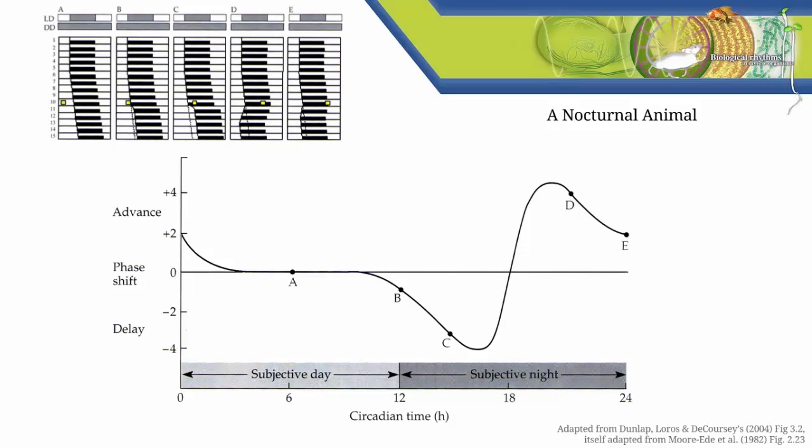In our example here, we've built a curve for just one nocturnal organism, using light as our stimulus. But you can build PRCs for diurnal organisms as well. And you can build a general PRC for a whole population, or a whole species of organisms, by using data from many individuals. And you can build PRCs for stimuli besides light. But the basic shape you see here is a pretty standard shape for a PRC of any organism's response to light.